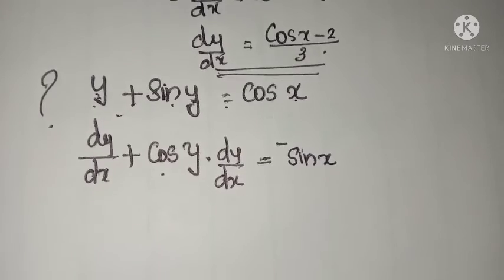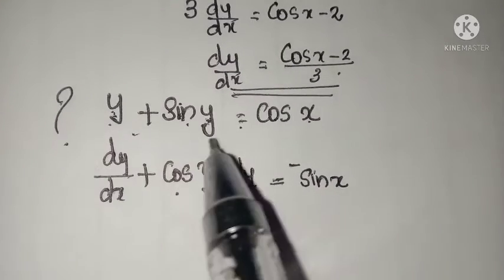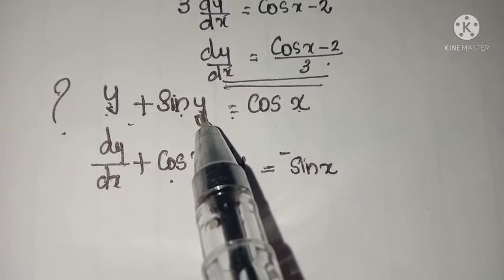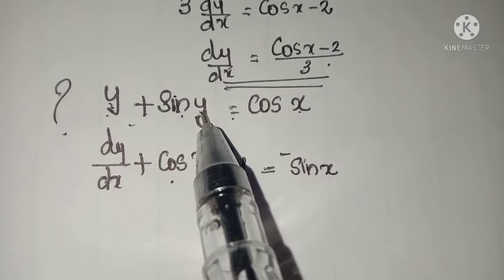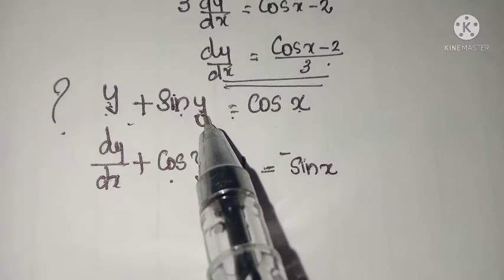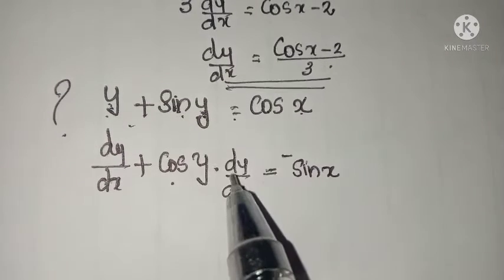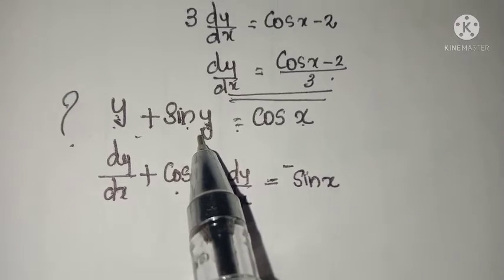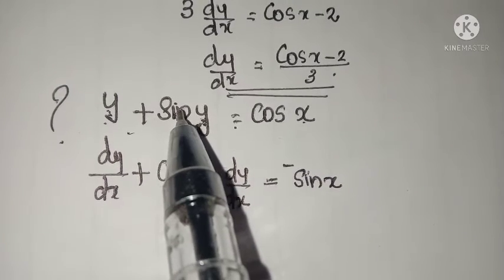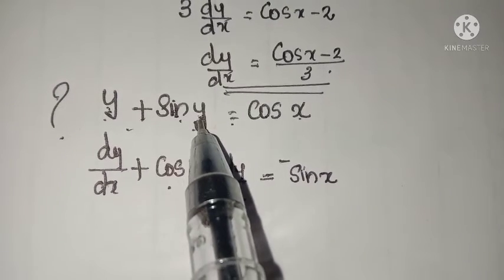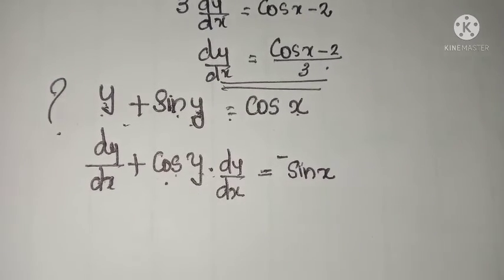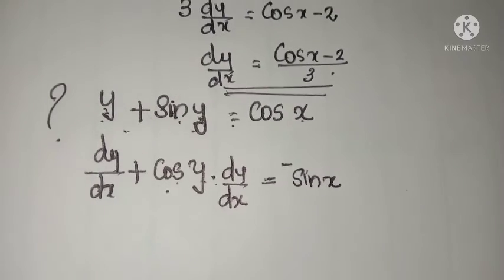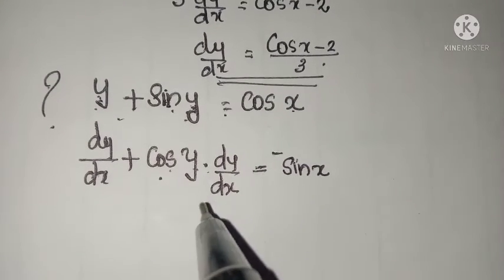Just keep in mind that whenever we see any term with the variable y, you have to write down dy by dx with that function. So, derivative of sin y is cos y into derivative of y, that is dy by dx.